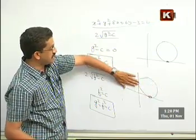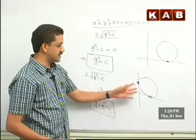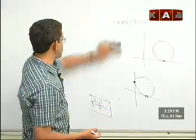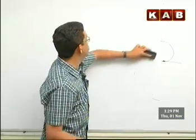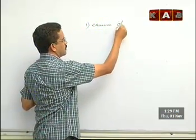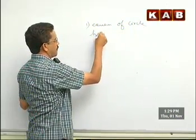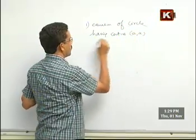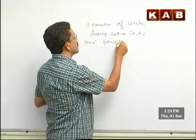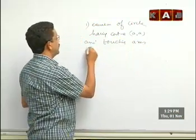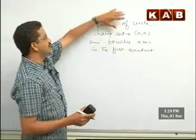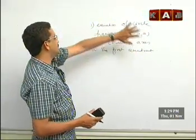Let me show you a small example that came in the exam last year. Question: find the equation of a circle having center at (a, a) and touching the axes in the first quadrant. If you look at the figure, the circle is touching both the x-axis and y-axis, with center at (a, a) in the first quadrant.